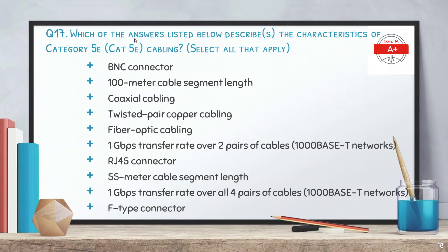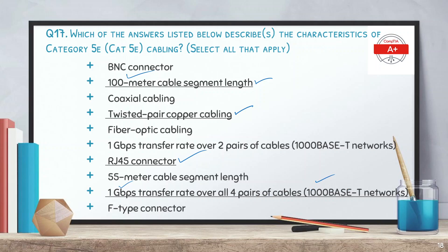Question 17: which of the answers listed below describe the characteristics of category 5e (Cat 5e) cabling? Select all correct answers. The correct answers are: maximum cable length of 100 meters; twisted pair copper cabling; RJ45 connector; transfer rate of 1 Gbps over all four pairs of cables; and this standard is known as 1000Base-T.